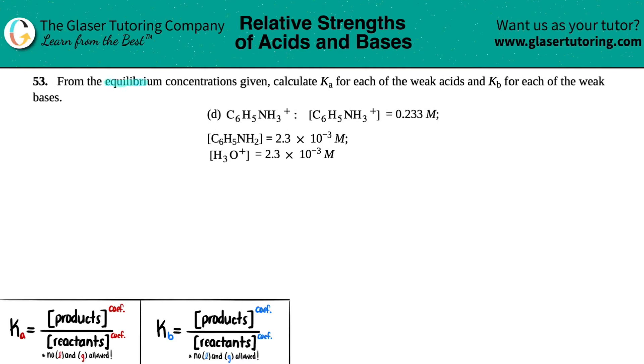Number 53. From the equilibrium concentrations given, calculate the Ka for each of the weak acids and Kb for each of the weak bases. Then we have letter D.